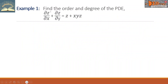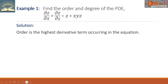Example one: find the order and degree of the partial differential equation — partial derivative of z with respect to x plus partial derivative of z with respect to y equals z plus xyz. The order is the highest derivative term occurring in the equation. We can see here that we have two partial derivatives, and both of them are first partial derivatives. So the order equals one.